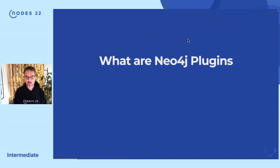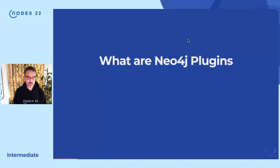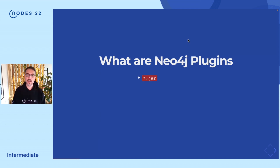So what are Neo4j Plugins? Neo4j Plugins provide a way of extending the core functionality of Neo4j with your own code. Neo4j is written in Java and runs inside the JVM, so in order to extend the functionality of Neo4j, you have to write Java classes and make them available to Neo4j. You do this by packaging them as a jar file and putting them inside the Plugins folder of your Neo4j installation.